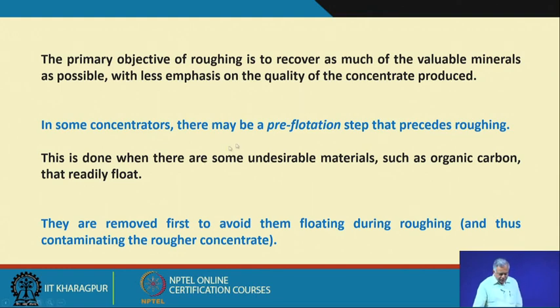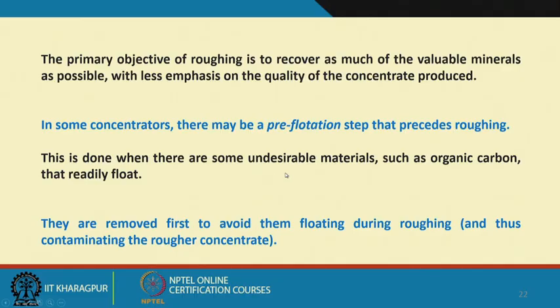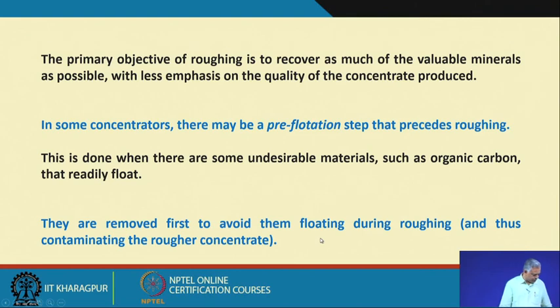The primary objective of roughing is to recover as much of the valuable minerals as possible with less emphasis on concentrate quality — ensuring you do not lose your hydrophobic material. In some concentrators there may also be a pre-flotation step that precedes roughing. This is done when there are undesirable materials such as organic carbon that readily float — they are removed first to avoid contaminating the rougher concentrate. There is no hard and fast guideline; the entire strategy must be driven by material characteristics.